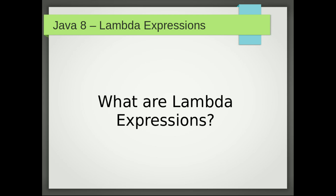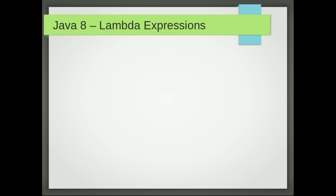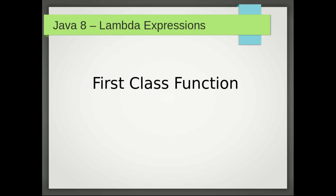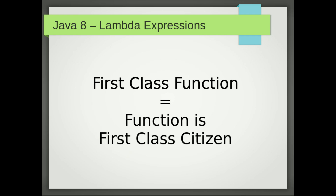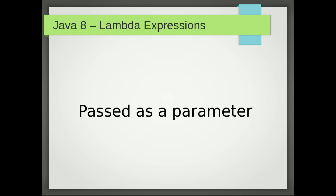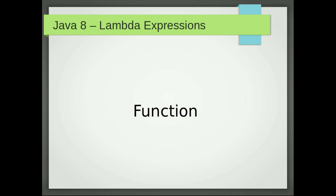Let me begin with explaining what lambda expressions are in Java 8. Lambda expressions, not just lambda expressions, but with method references are Java's way to support first class functions. Then what are first class functions? If a programming language has a first class function, that means a function is a first class citizen. In a programming language, a first class citizen is an entity which can be passed as a parameter or can be returned as a result from a function. It can be assigned to a variable and can be stored in data structures. When I say function, it's not just a function in the functional programming language. In functional programming, a function means a relation between a set of inputs and a set of outputs.